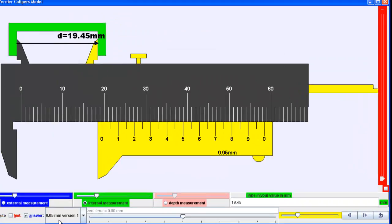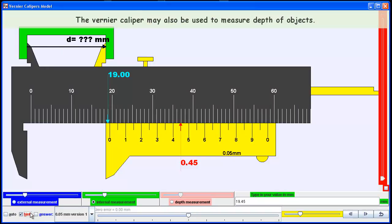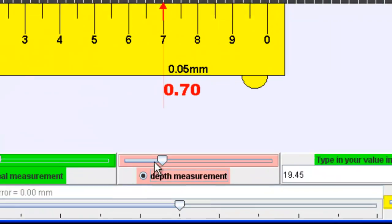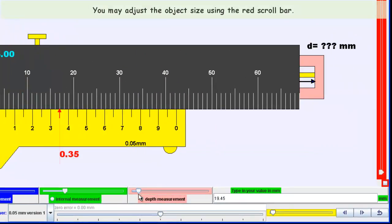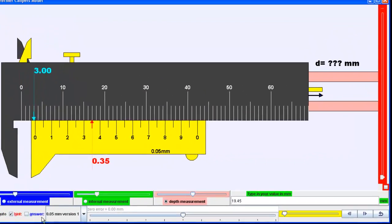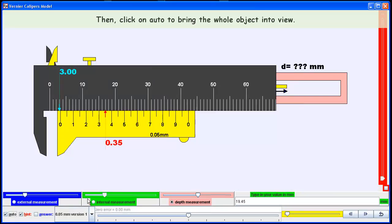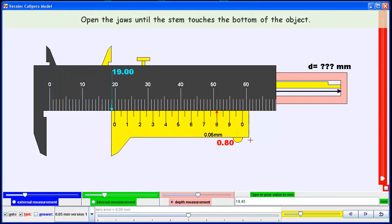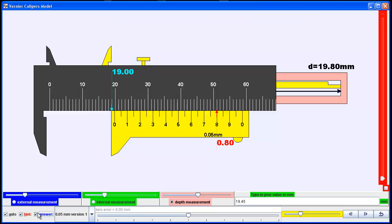The vernier caliper can also be used to measure depths, for example, test tubes. You can adjust the length of the test tube and use the vernier caliper in the same way to measure the depth. In this case, the reading is 19.80 mm, assuming there are no zero errors.